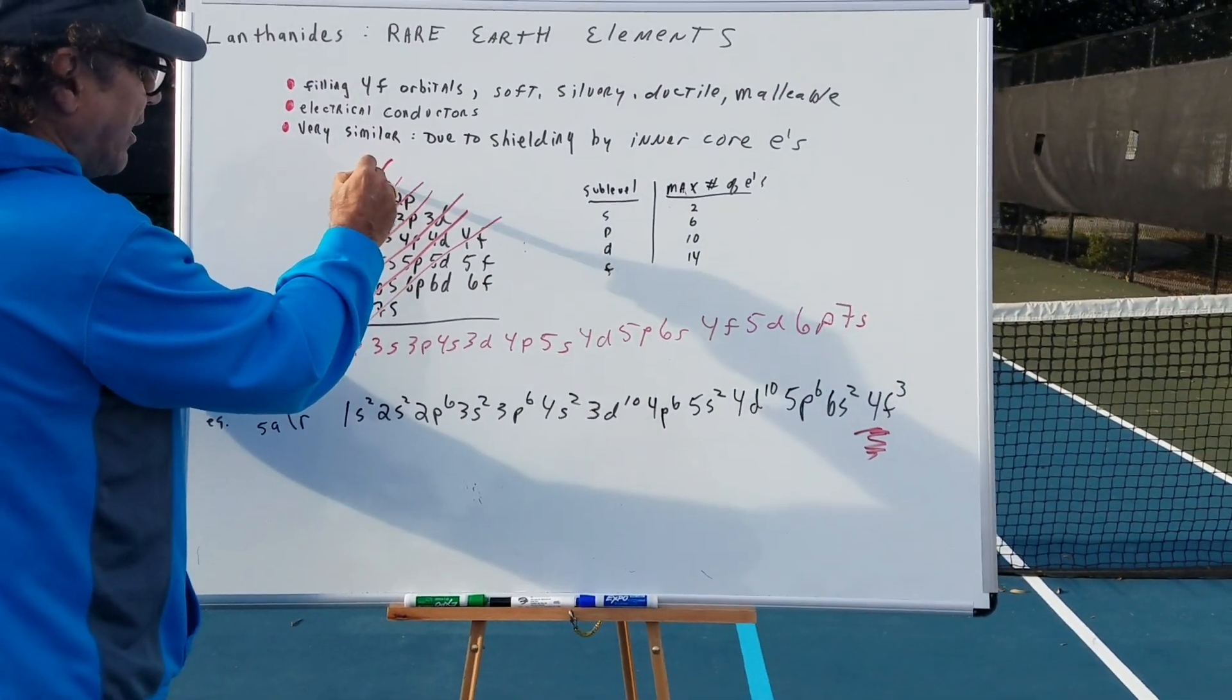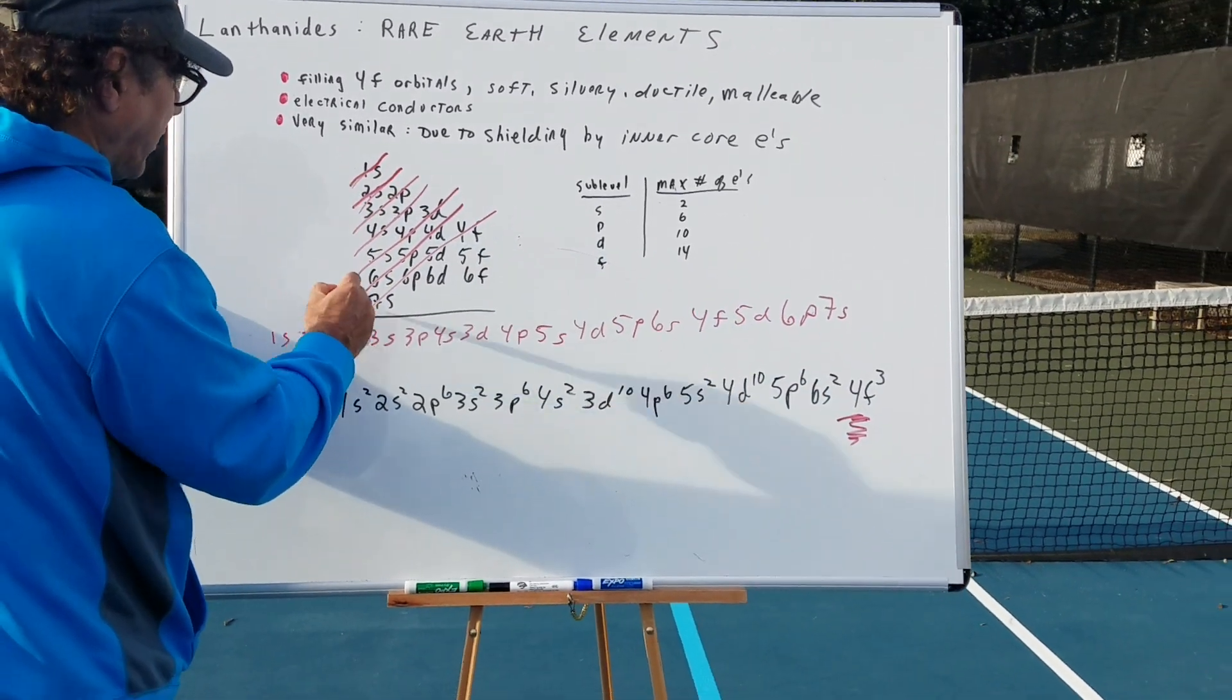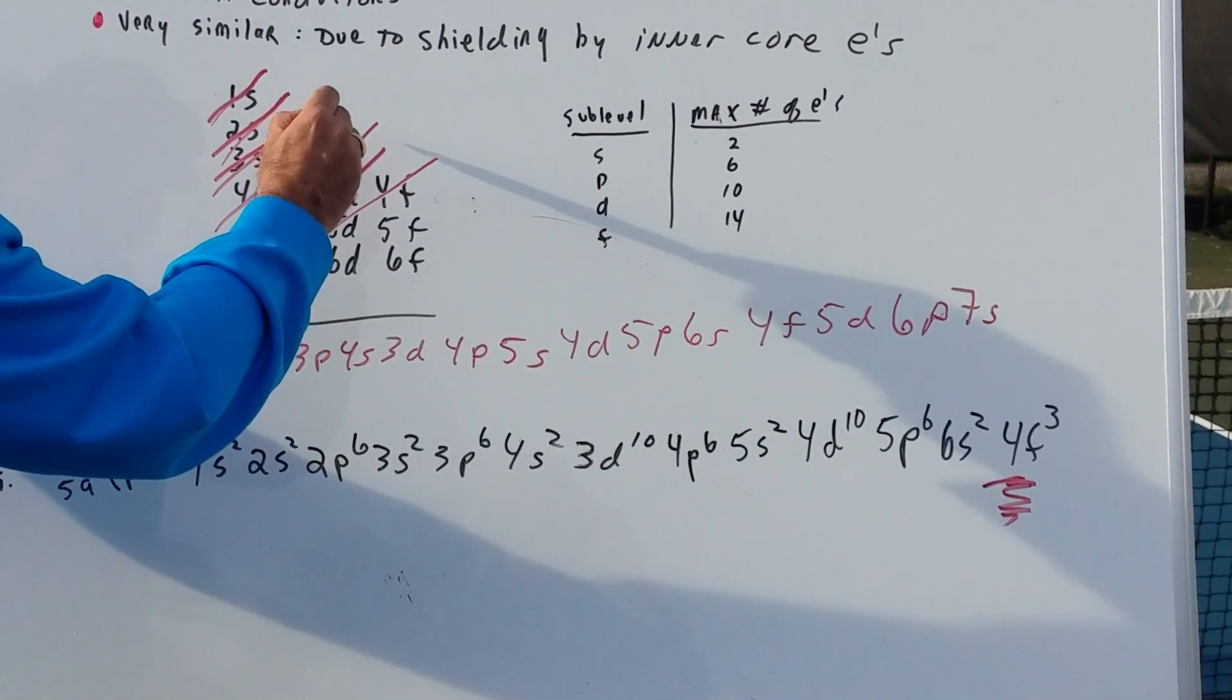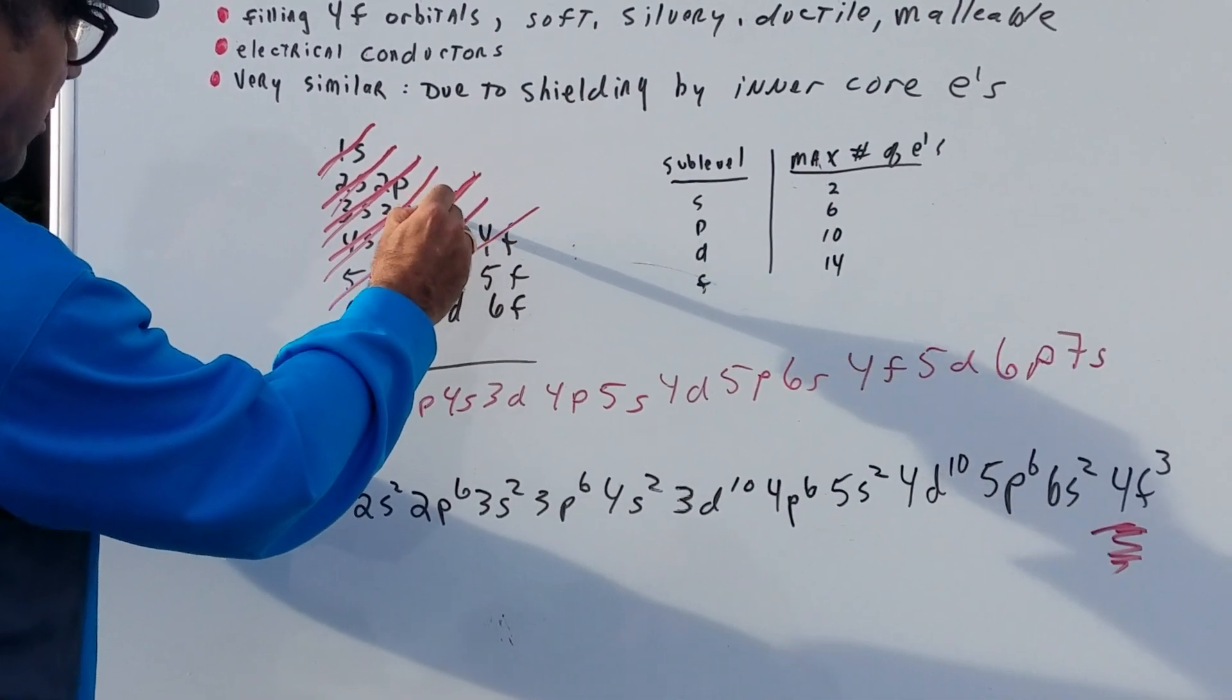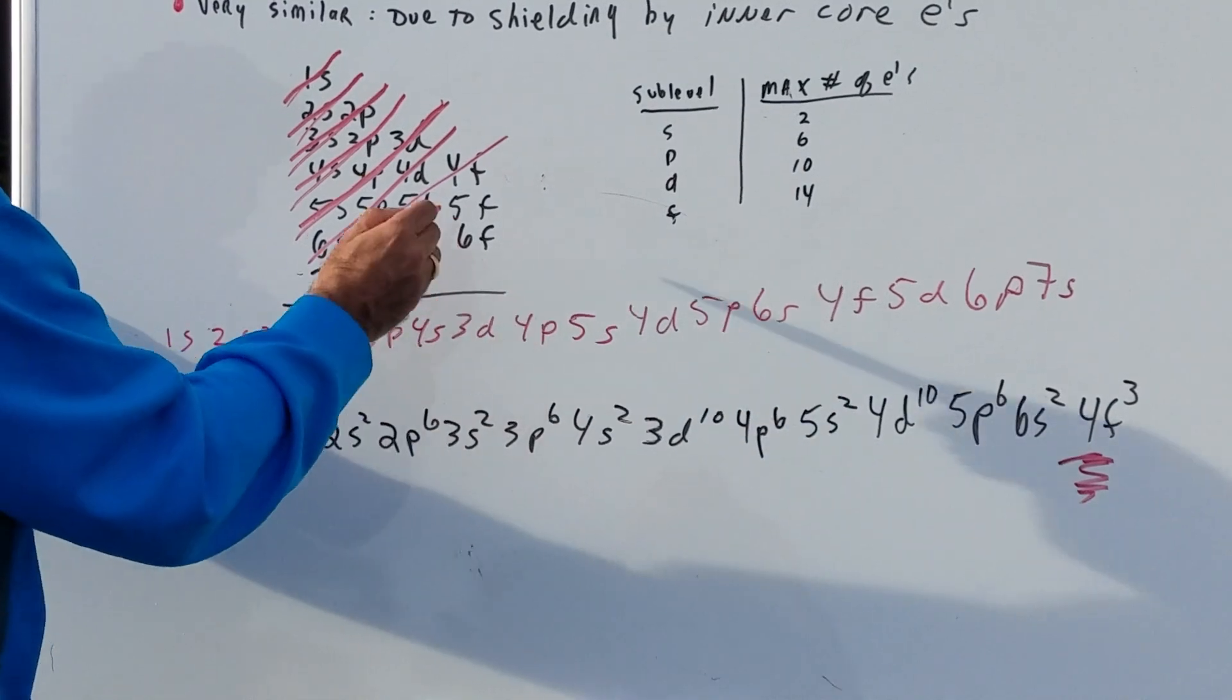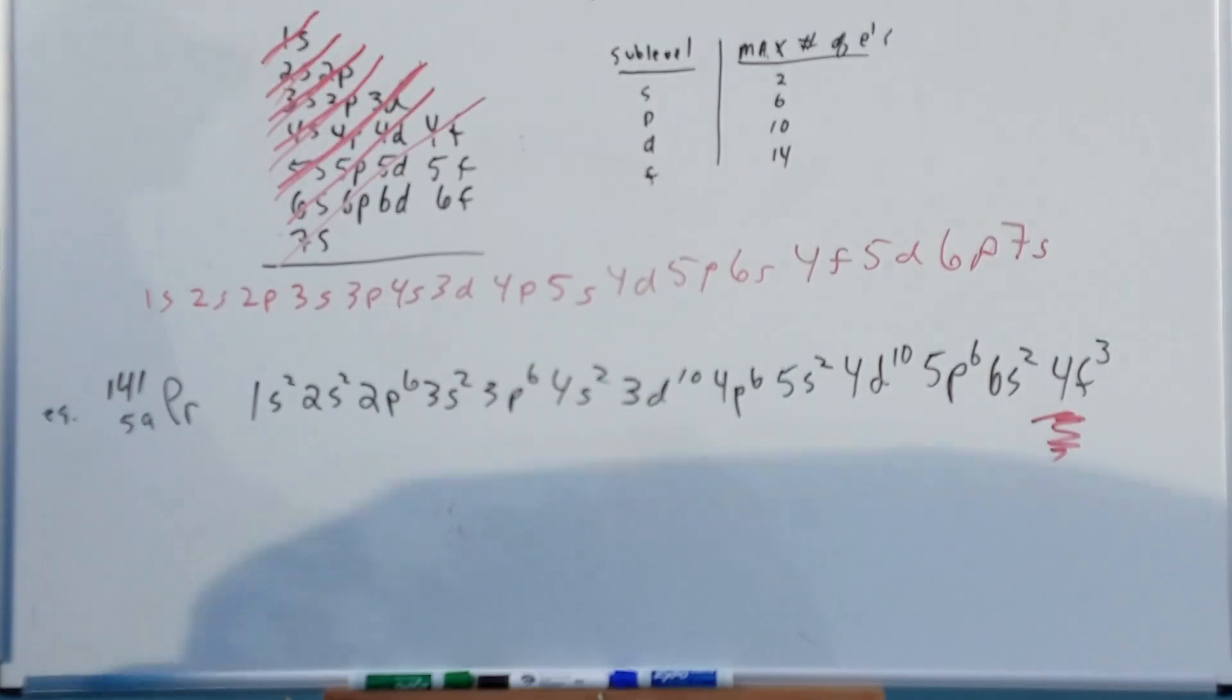When you come down like this, that'll be 1s, then you come down again, that'll be 2s. Then you come down, 2p, 3s. And then we come down here, 3p, 4s. And then when you come down here, what does this say? 3d, 4p, 5s, etc. I want you to practice it until you can get out to lucky 7.